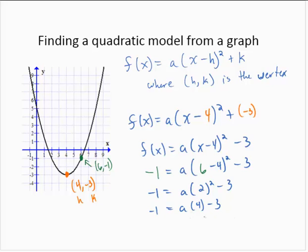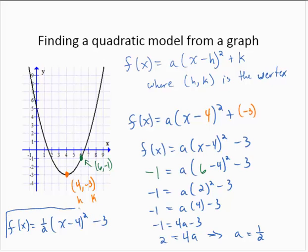So a times 4 is 4a. Adding 3 to both sides, 2 is equal to 4a, and dividing by 4, a is equal to 1 half. So revising the model, I would write f of x is 1 half times x minus 4 squared minus 3. And that function would model the graph.